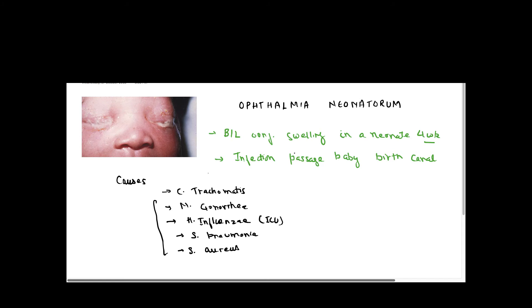These organisms are important to remember, but any virus or bacteria can be responsible. The important viruses that can cause Ophthalmia Neonatorum are Adenovirus, which is very common, and Herpes Simplex Virus.